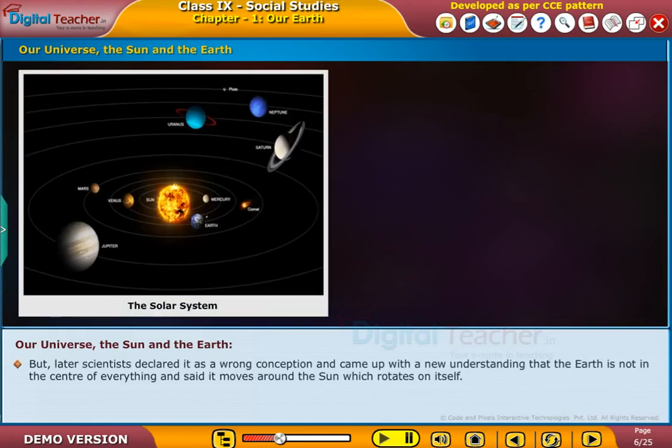But later, scientists declared it as a wrong conception and came up with a new understanding that the Earth is not in the center of everything and said it moves around the Sun, which rotates on itself.